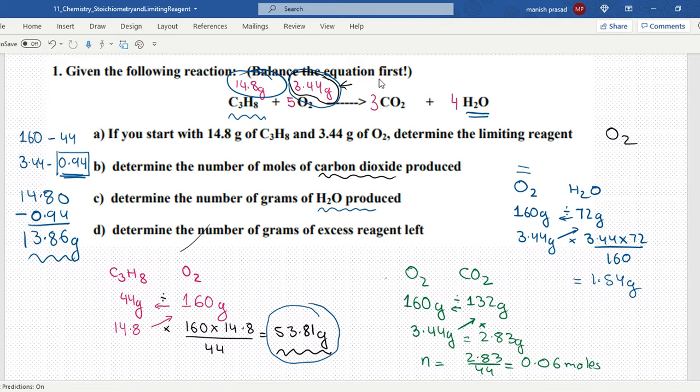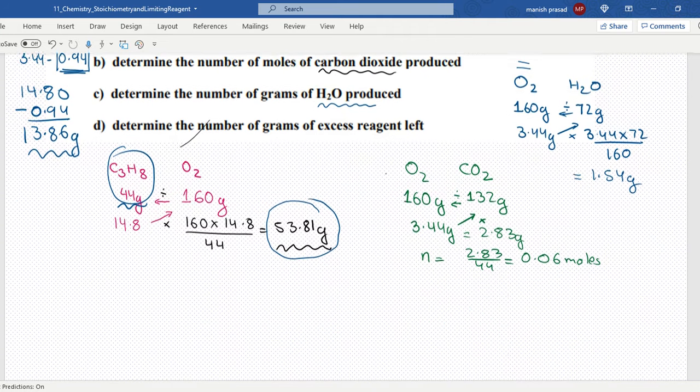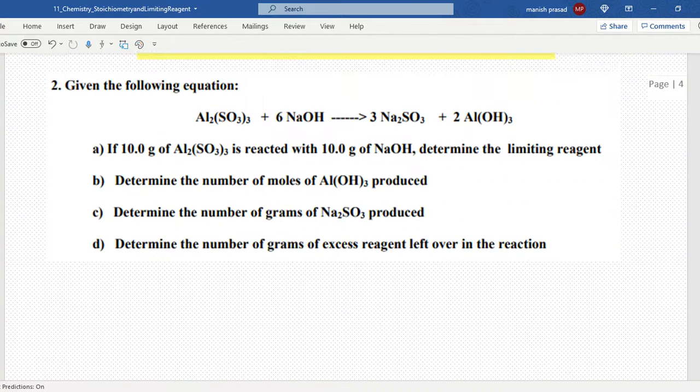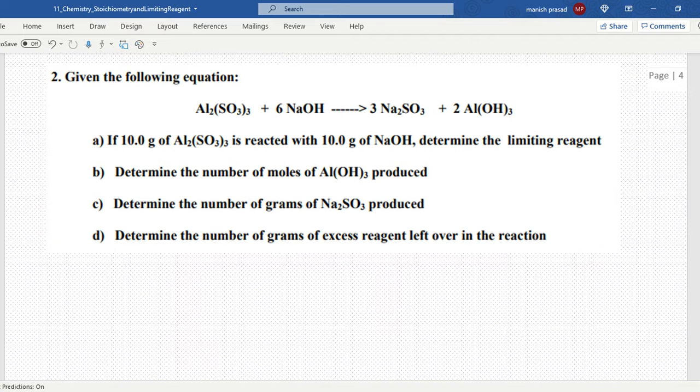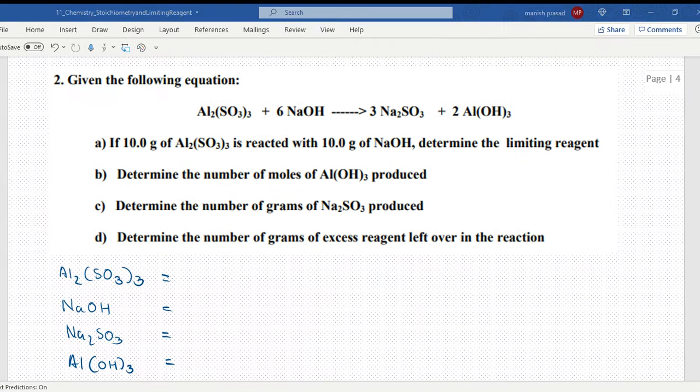Now let's go to the next question. We have aluminum sulfate. I hope everybody has the periodic tables ready. I want you all to give me the molar mass: aluminum sulfite, NaOH, Na₂SO₃, and aluminum hydroxide. I want the molar mass of all these four things. Let's see fastest finger first.